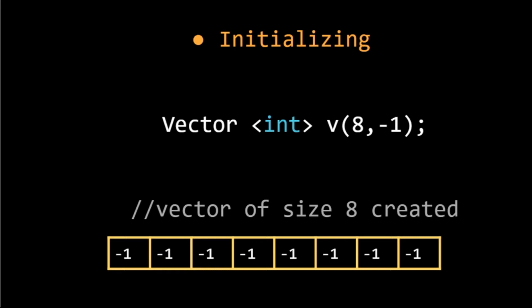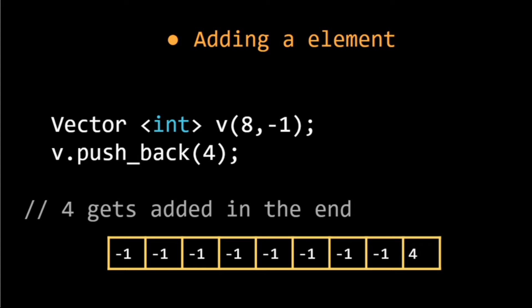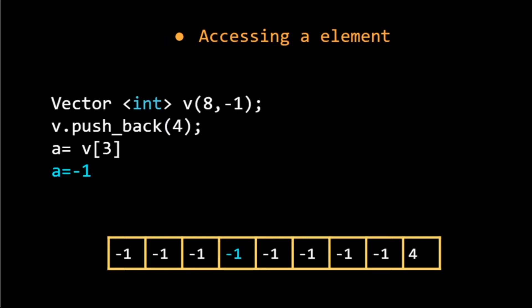If we want to add a new element in a vector, we can use push_back. When I am writing v.push_back(4), it is adding 4 at the end of the vector. We can access all the elements like we access them in an array. If we write a equal to v[3], it is giving the value of minus 1 that is at third index, and the index is starting from 0.